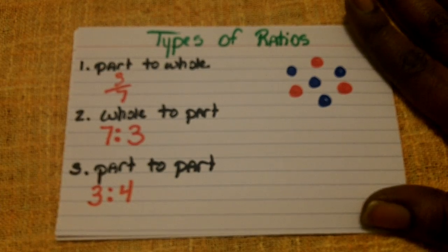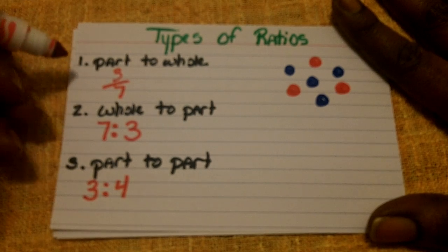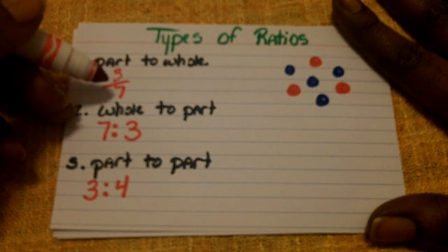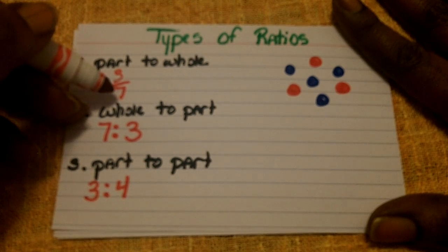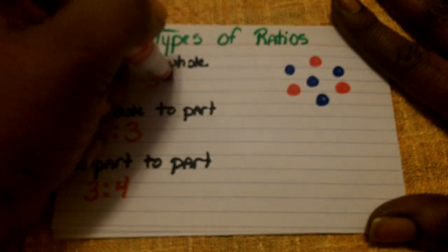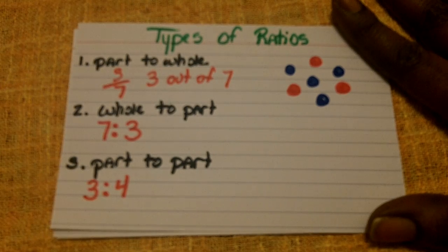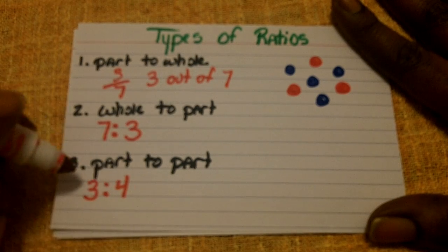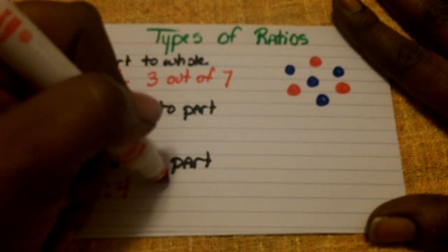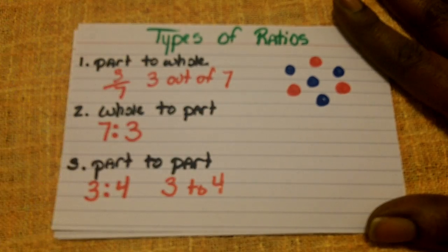Now there's also words that you could use to represent some of these different types of ratios. For example, number one, a part to whole. We were doing red out of the total. So you could simply write the three red out of the total amount of circles, which is seven. Same down here. When we're comparing a part to another part, we can compare three reds to the four blues.